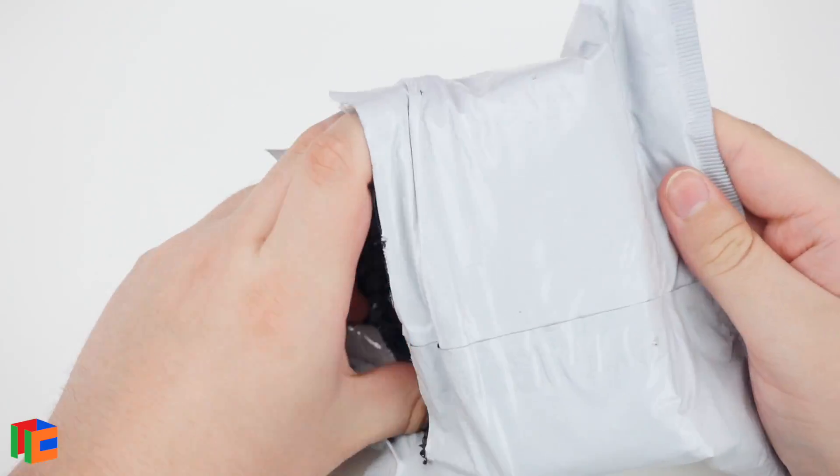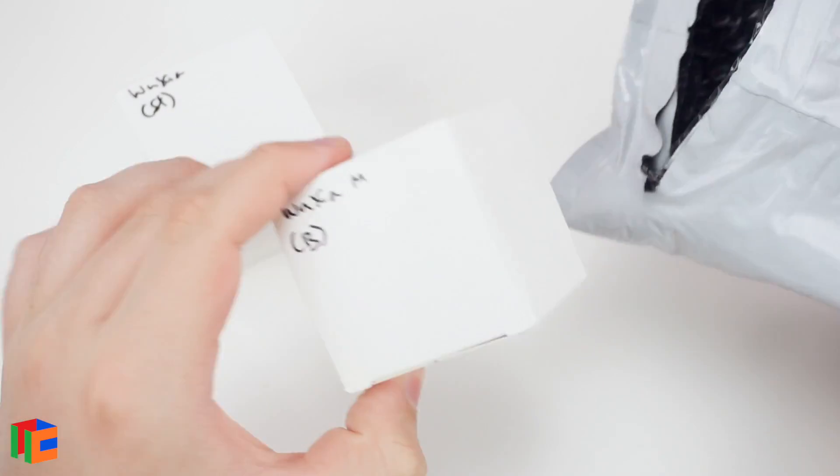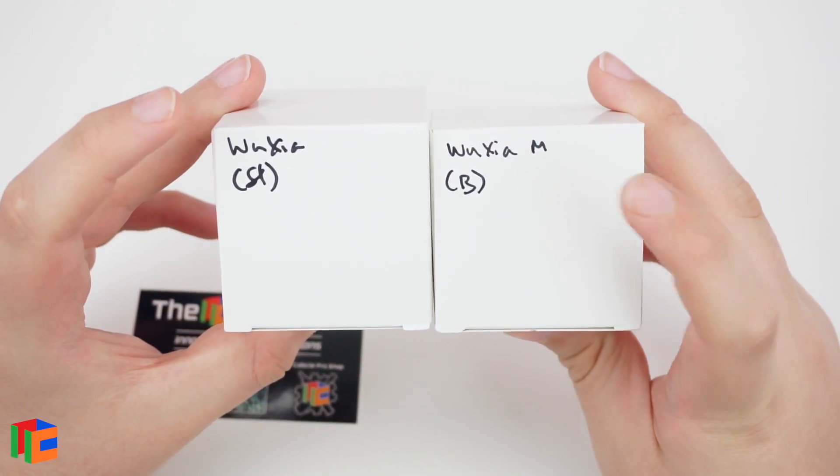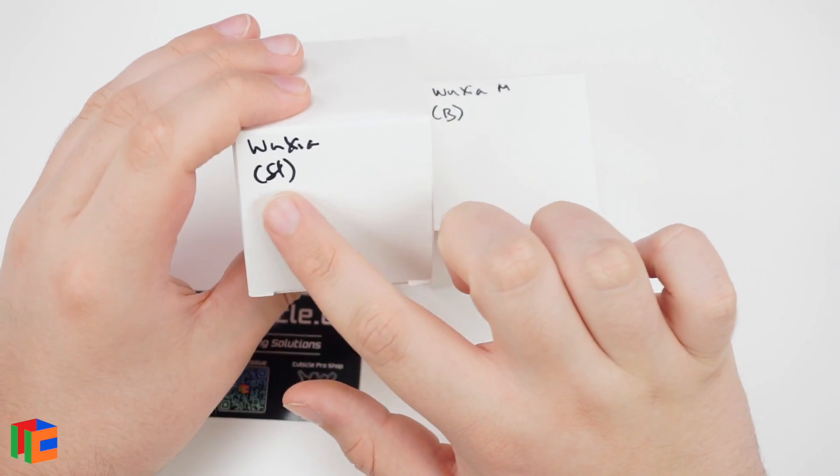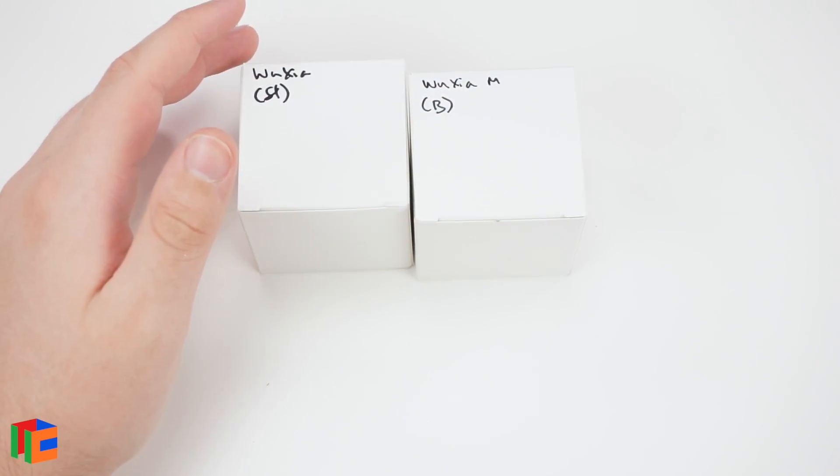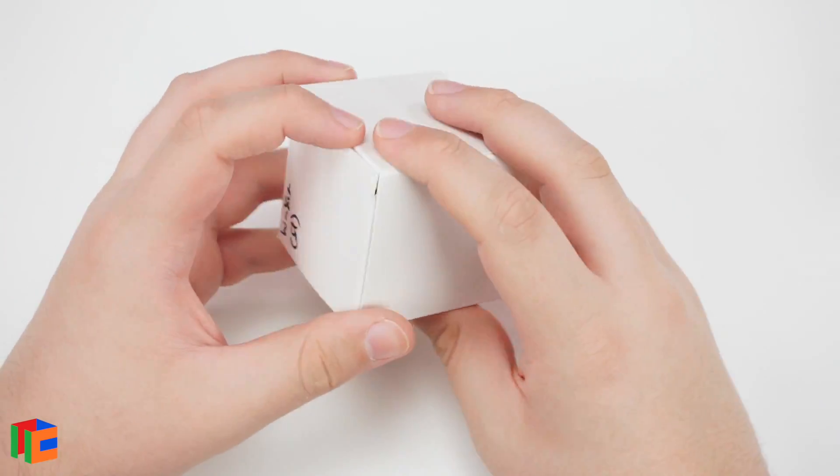Alright, so we've got two boxes. As you can see we've got the Wuxia and the Wuxia M. It looks like we've also got something written down here. I don't know what that means exactly, but I guess we will find out. So let's go ahead and start with this one.